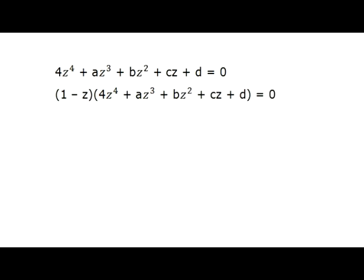Here is the brilliant idea of transforming the given polynomial equation used in the official AMC solution. We multiply both sides of our equation by the linear polynomial (1 - z). At first glance, this operation is paradoxical — we increase the degree of our equation by 1 and add one more root. At least we know what root has been added: it's equal to 1.